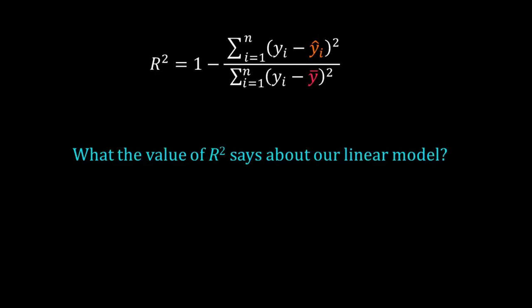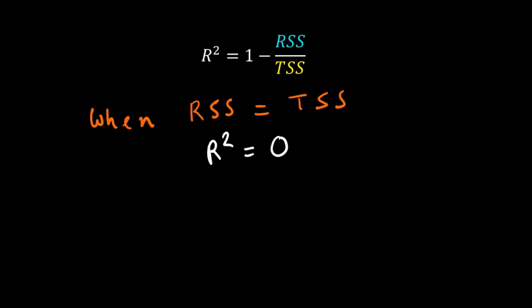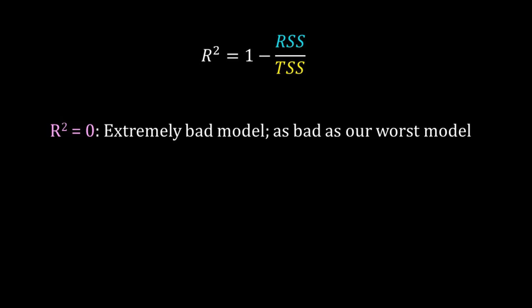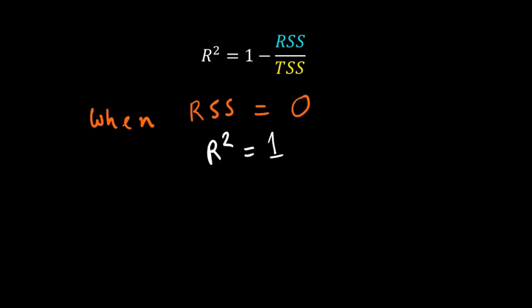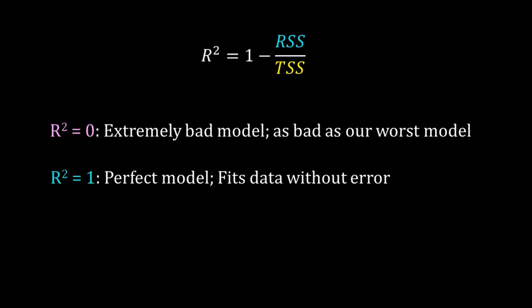Fine, we can write R² in different forms. But what does a specific value of R² obtained for our regression model tell us about the fitted linear model? When RSS is equal to TSS, that means the error in the fitted linear model is same as that of the worst model. R² is zero. In that case our fitted linear model is an extremely bad model. When our linear model has exact fit to the data, then there is no error and RSS is equal to zero. In that case R² is equal to one. So a perfectly fitted linear model will have R² equal to one.